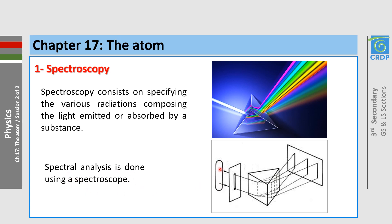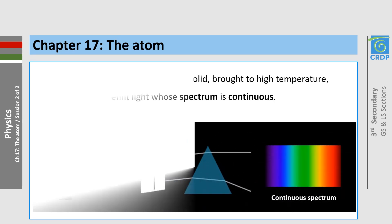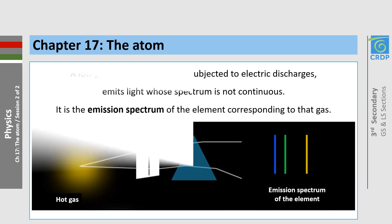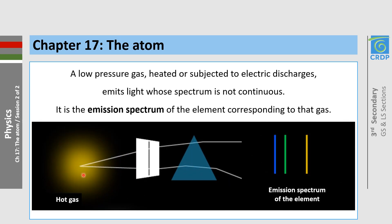For example, the light emitted by the source enters the spectroscope through the slit, and on the screen we can see the different radiations composing the analyzed light. If the source contains a high-pressure gas, a liquid, or a solid brought to high temperature, we obtain a continuous spectrum. If the source contains a low-pressure gas heated or subjected to electric discharges, we obtain a line emission spectrum, which is not continuous.